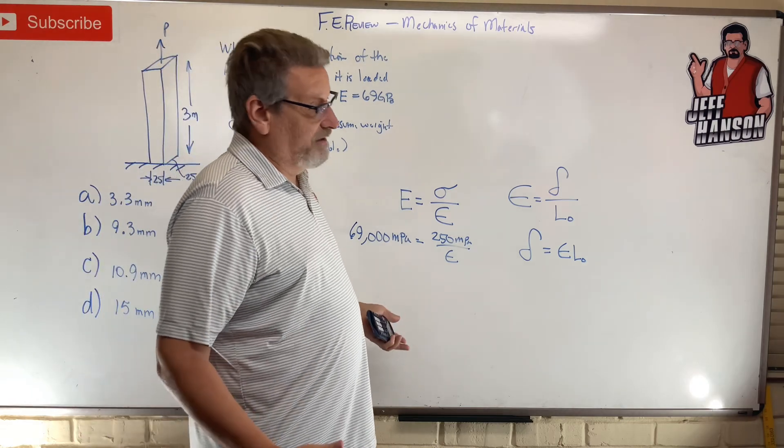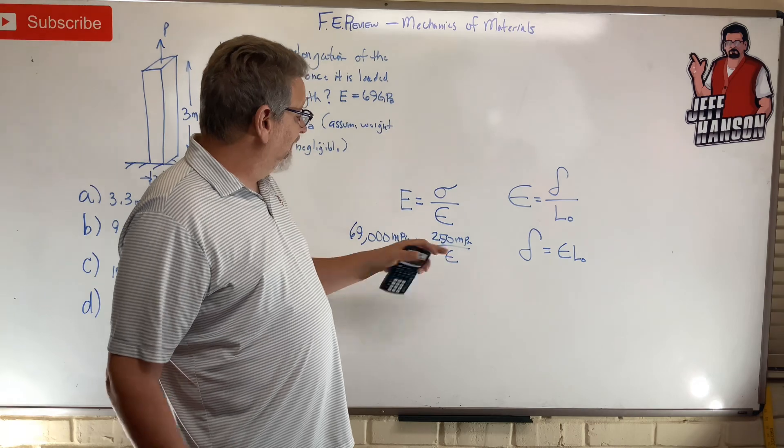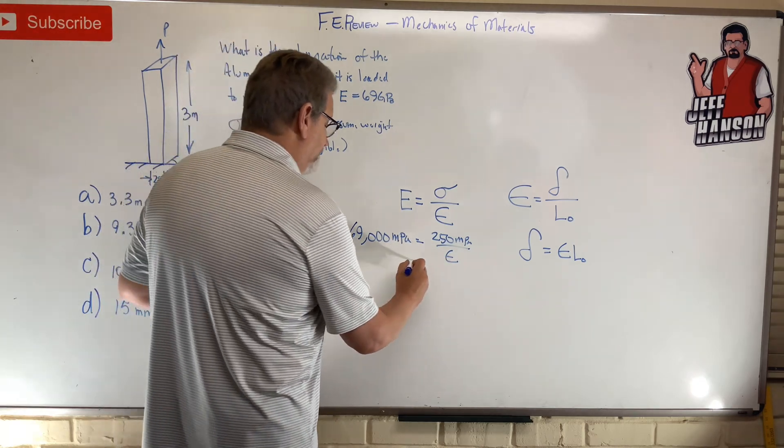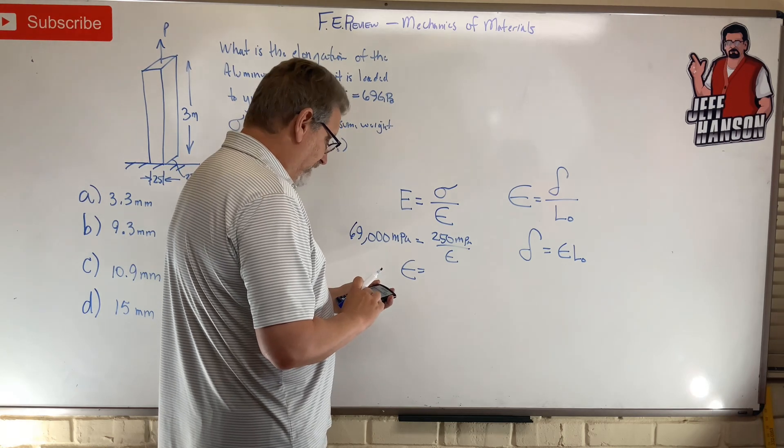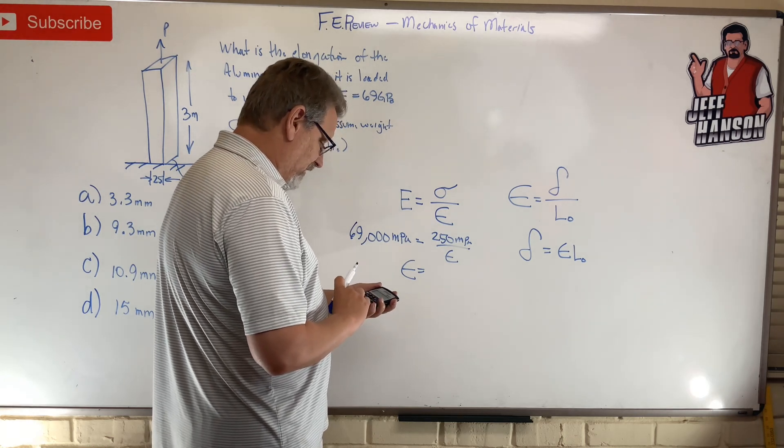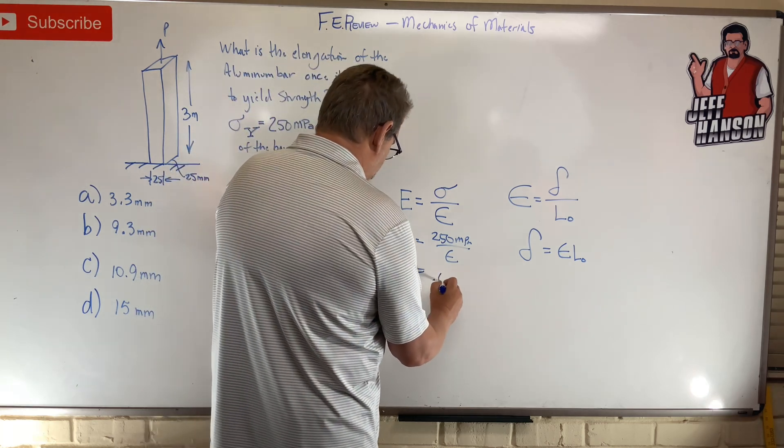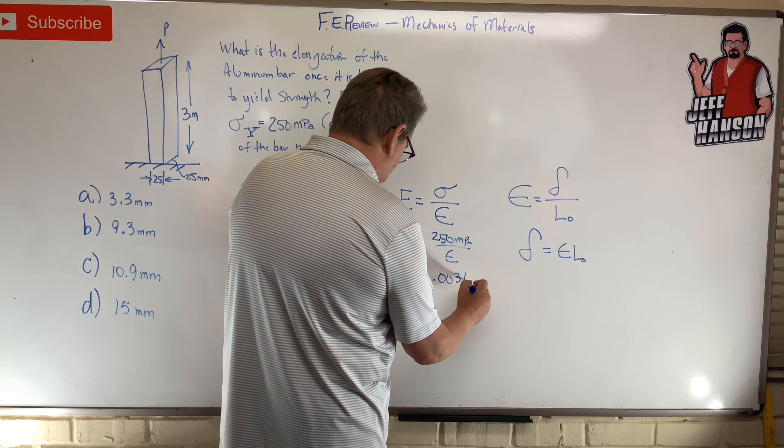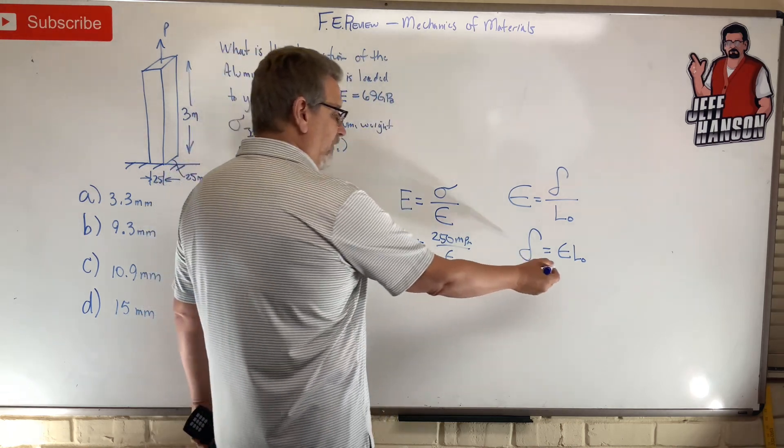Bring this over to the other side. Take that to that side. So strain is equal to 250 divided by 69, which equals 0.003623. Right? Now take that because it goes there, right? This goes right there.